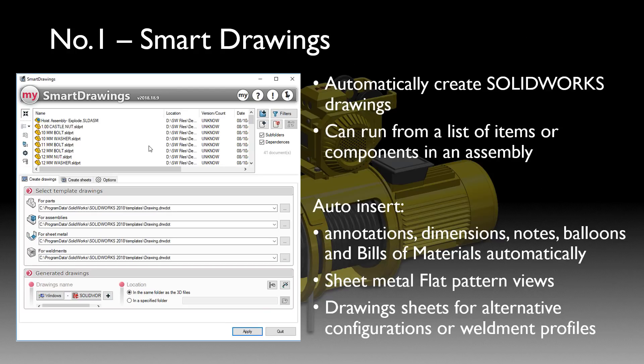The first tool is Smart Drawings. It allows you to automatically create drawings from your SOLIDWORKS models. It can run from a list of items or from an assembly project. We can get it to automatically insert annotations, dimensions, and bills of materials into our documents, and we can also get it to create additional sheets for things like sheet metal flat patterns, configurations, or weldment profiles.